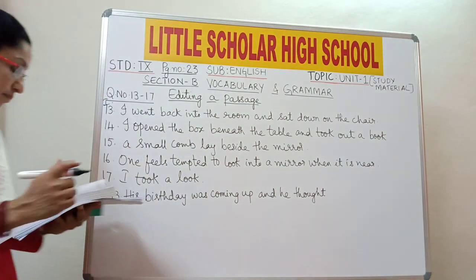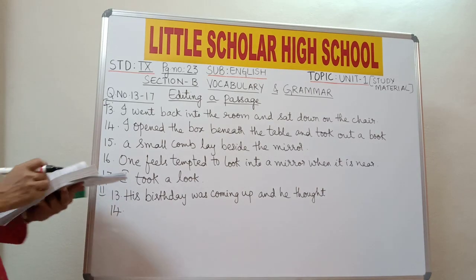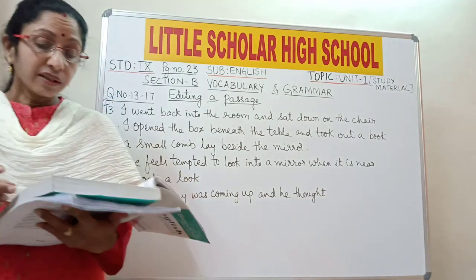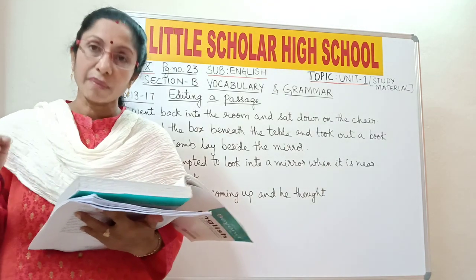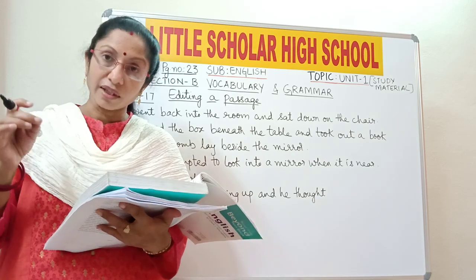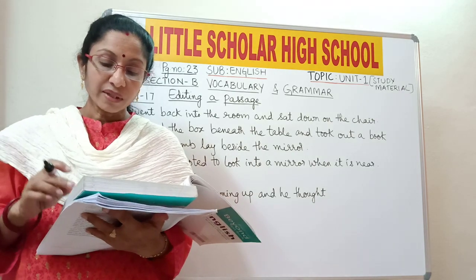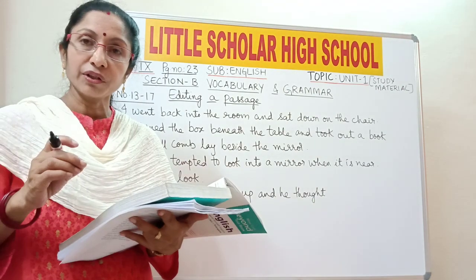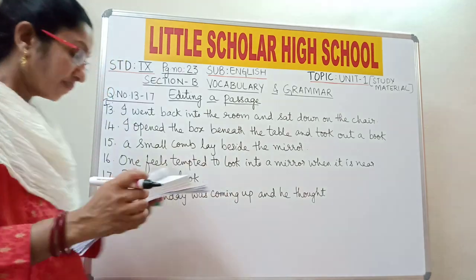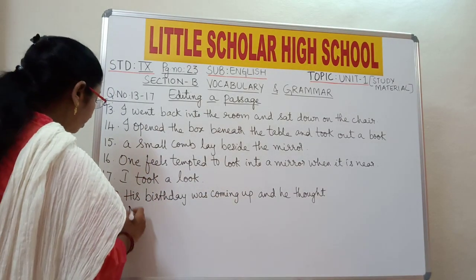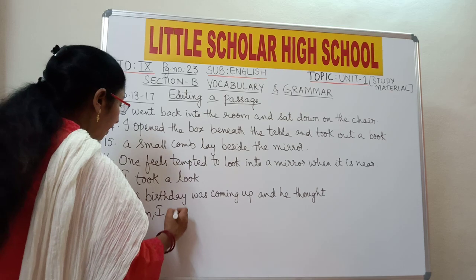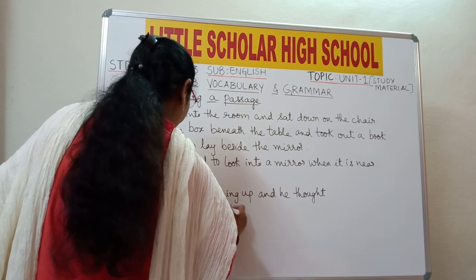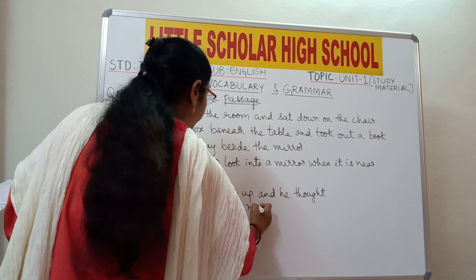Question number 14: 'Mom, I wanted a bike for my birthday.' The word 'wanted' represents past tense, but he is telling his mother that he wants a bike now. So the verb 'wanted' should be replaced with 'want' in present tense. Write: 'Mom, I want a bike for my birthday.'